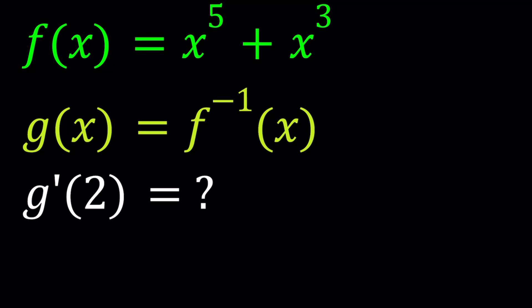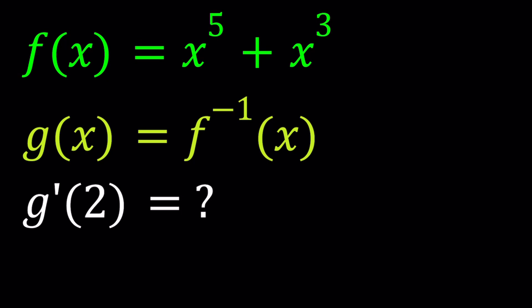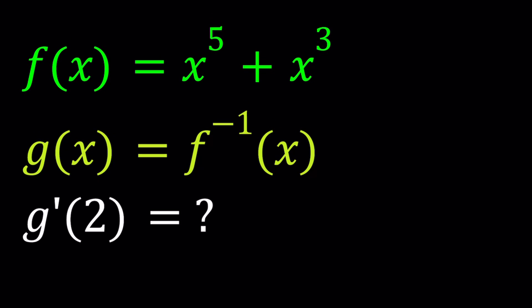We're given f(x) = x^5 + x^3 and g(x) is given as f^(-1), the inverse function for f(x). We're supposed to evaluate the derivative of g at 2.